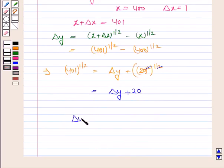Now we know that delta y is approximately equal to dy and dy is equal to dy by dx into delta x. So delta y is equal to dy by dx into delta x.